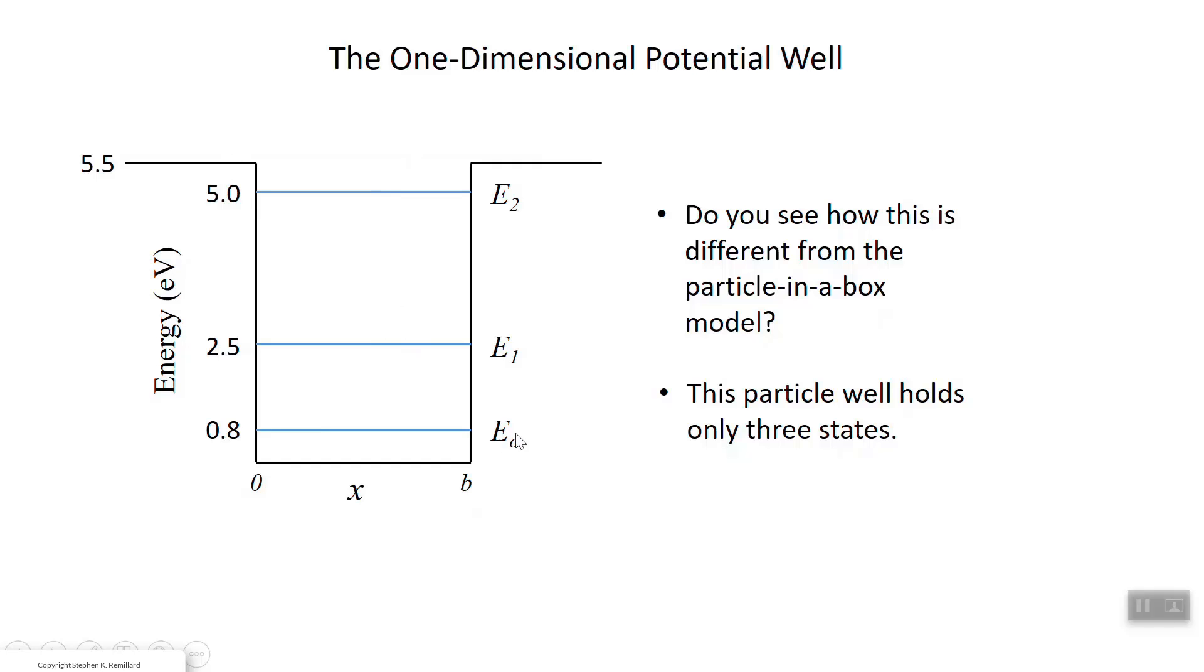An electron anywhere around here can have these potential energies. Between x equals zero and b, it can actually have lower energies, and so you have a well. If you have an electron with 2.5 electron volts of energy, you can toss it in this well and it will be stuck in it. And it will stay right here at this level. There are only discrete energy levels that are allowed, just like you saw with the particle in a box. So you only have these discrete energies allowed.